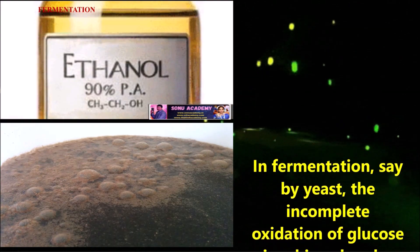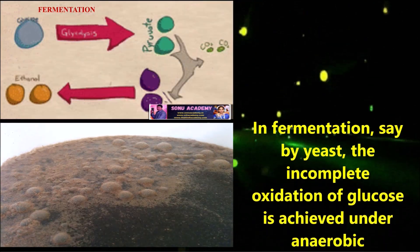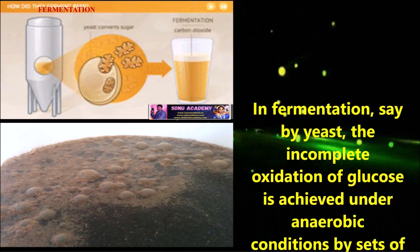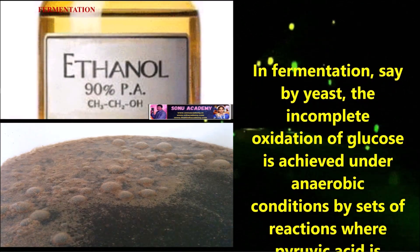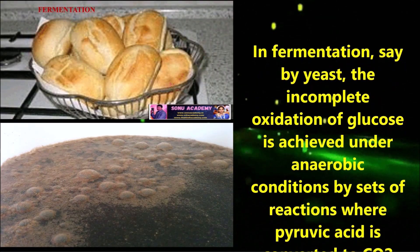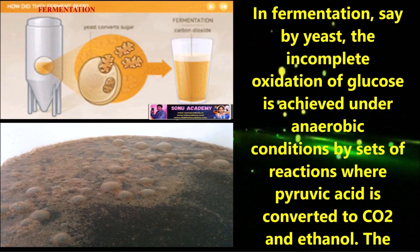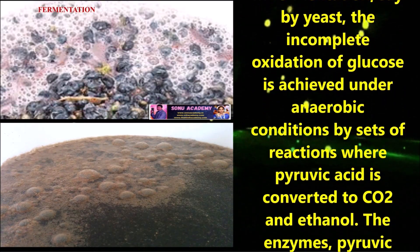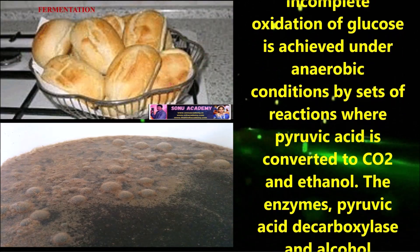In fermentation, say by yeast, the incomplete oxidation of glucose is achieved under anaerobic conditions by sets of reactions where pyruvic acid is converted to CO2 and ethanol.